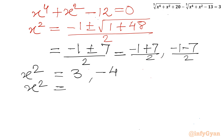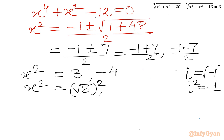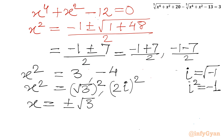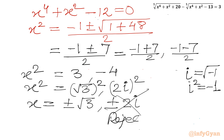Can we write 3 as (√3)²? And since i² = −1, we can write −4 as (2i)². Taking square roots of both sides: x = ±√3, or x = ±2i — which we reject as the solutions are complex. So the only real solutions are x = ±√3.